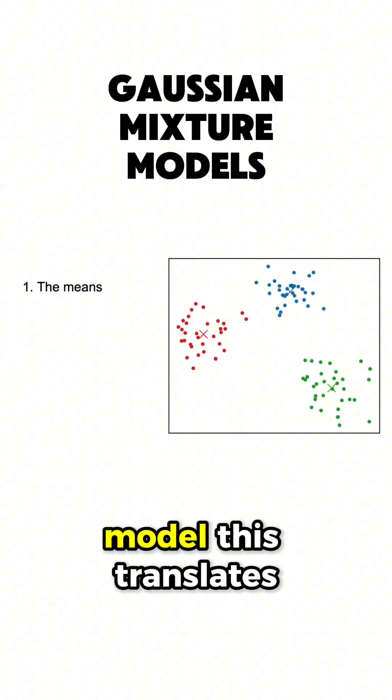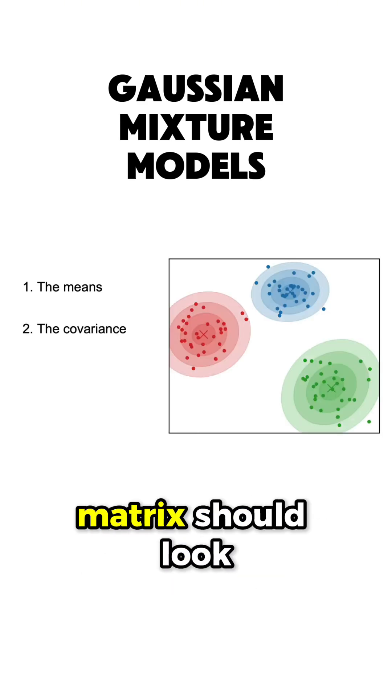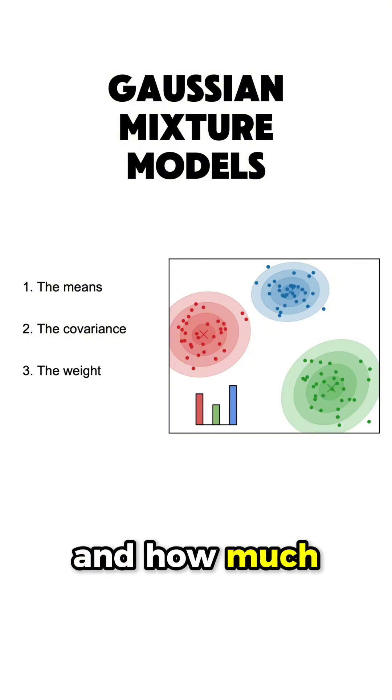For the GMM model, this translates to having an initial guess of where each Gaussian should be centered, how their covariance matrix should look like, and how much weight we should provide to each Gaussian in the final distribution. All these are the latent or hidden variables of our model that we don't know and that we are trying to estimate.